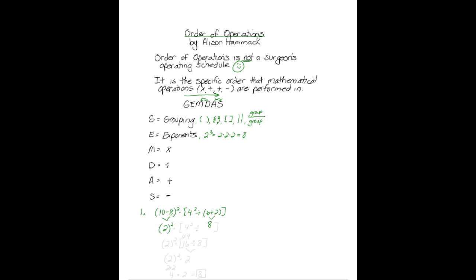So let's rewrite this problem. We have 2 squared times 4 squared divided by 8. Now we want to finish this grouping here. Exponents come before division. So we first expand this out: 4 times 4 is 16. So we have 16 divided by 8 in the brackets, and we still have our 2 squared out here.